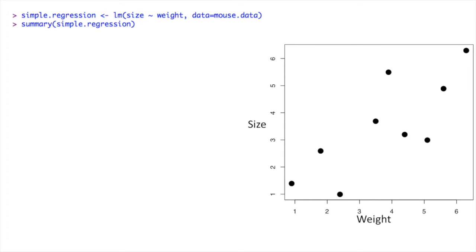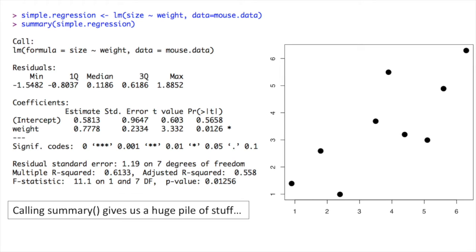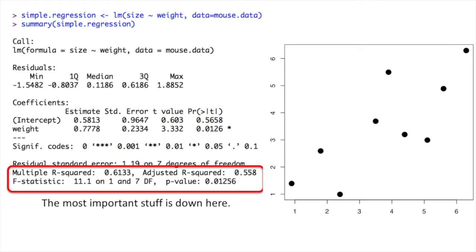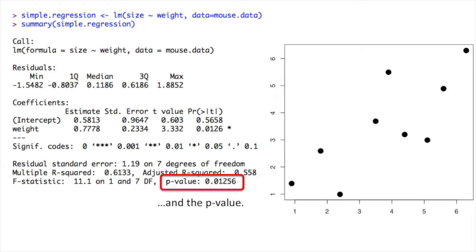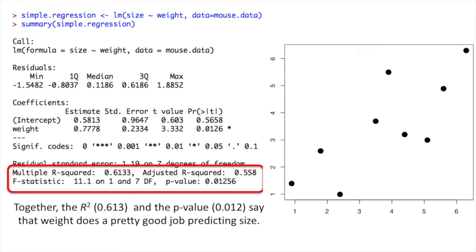Once we've run the linear models function and saved the output in a variable called simple.regression, we can get a summary of that regression using the summary function. Calling the summary function gives us a huge pile of stuff. The most important stuff is the R-squared and the adjusted R-squared. For simple regression, the multiple R-squared value — or just plain old R-squared — is the one we're interested in; the adjusted R-squared only applies when we have more complicated models. Together, the R-squared, which equals 0.613, and the p-value, which equals 0.012, say that weight does a pretty good job predicting size.